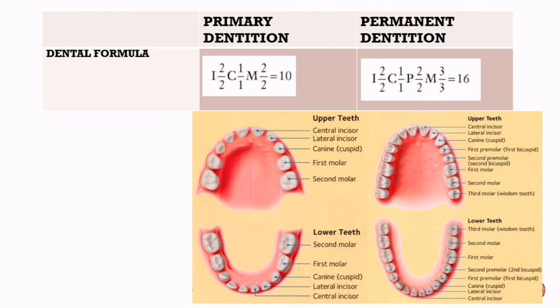In primary dentition, the formula is 2102 for upper teeth, which indicates 2 incisors, 1 canine, 0 premolars, and 2 molars on one side of the upper mouth. This indicates 10 teeth on one side of the mouth, and when we multiply it by 2, a total of 20 teeth are present in primary dentition.